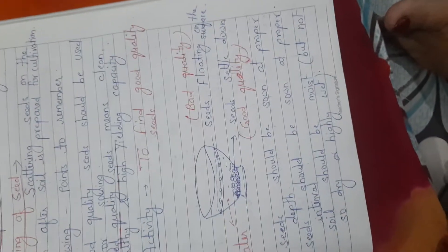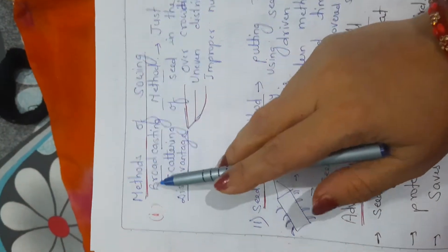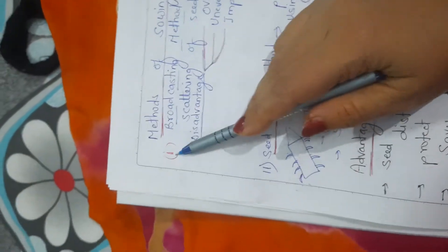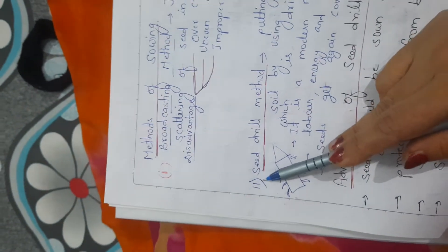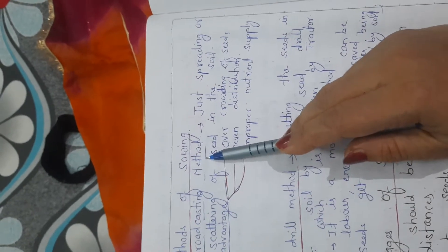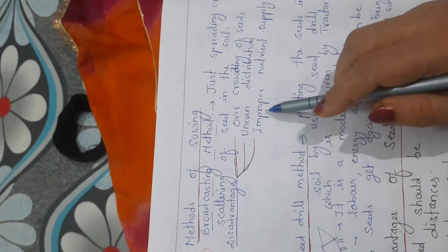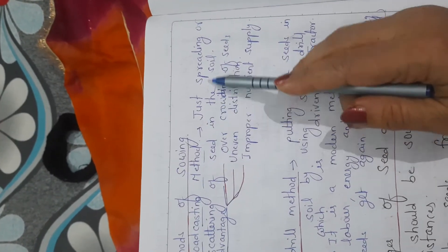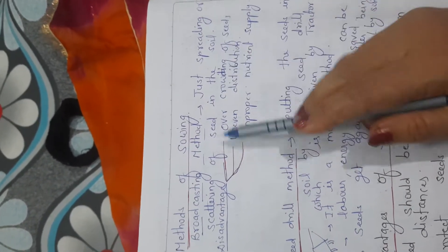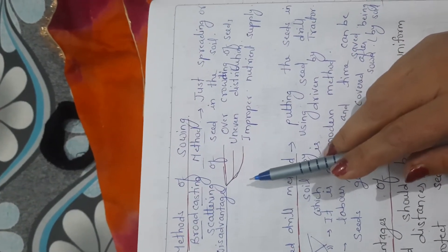Now the next topic is: what are the different methods of sowing? How do farmers sow seeds in the soil? Generally two methods are there — one is the broadcasting method and the second one is by using the seed drill. Broadcasting method means just spreading or scattering the seeds by hand in the soil.